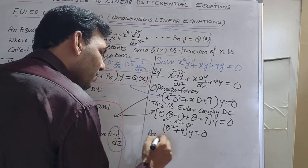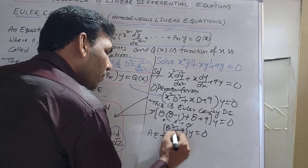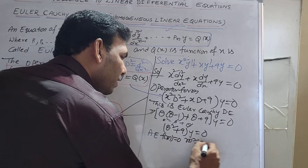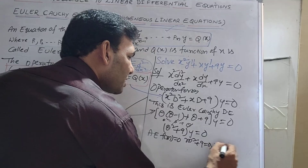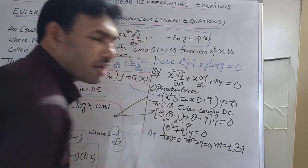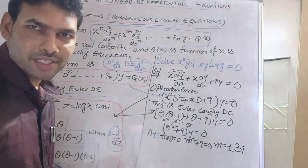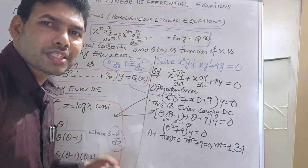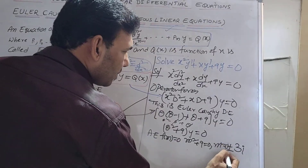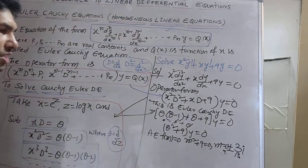We now have the auxiliary equation f(m) = 0: m² + 9 = 0, so m² = −9, giving m = ±3i. Therefore, α = 0 and β = 3.